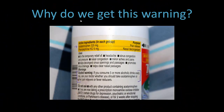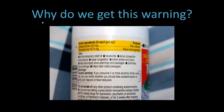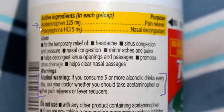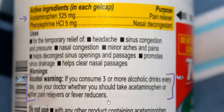Here's the question: why do we get this warning on a bottle of Tylenol, also known as acetaminophen? Zooming in, we can see acetaminophen listed as the active ingredient — a pain reliever — and if we scroll down, we see the alcohol warning. It says: 'If you consume 3 or more alcoholic drinks every day, ask your doctor whether you should take acetaminophen or other pain relievers or fever reducers.'